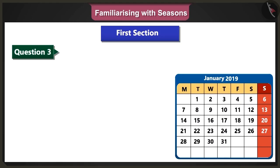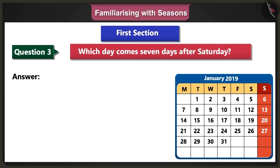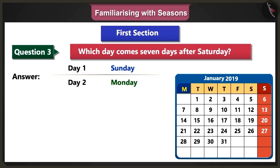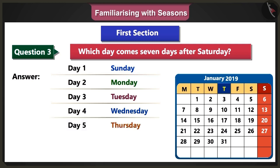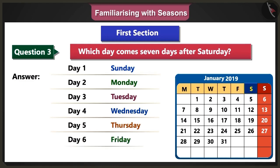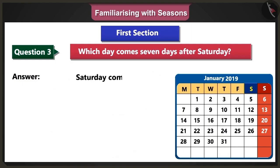Third question: Which day comes seven days after Saturday? Answer: After Saturday comes Sunday, Monday, Tuesday, Wednesday, Thursday, Friday, and Saturday. So Saturday comes again after seven days.